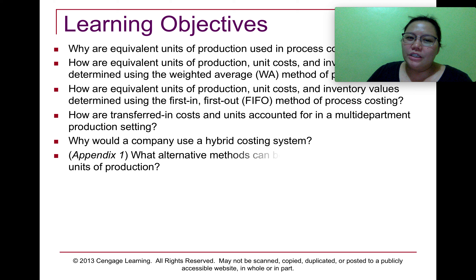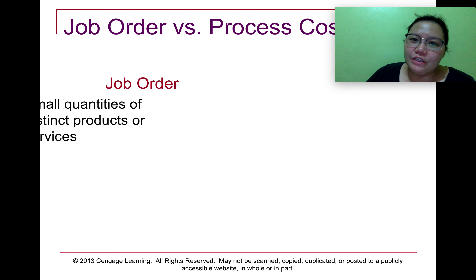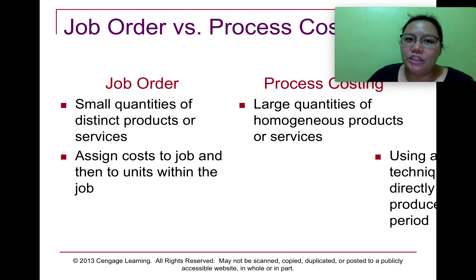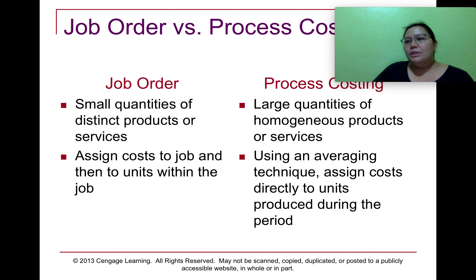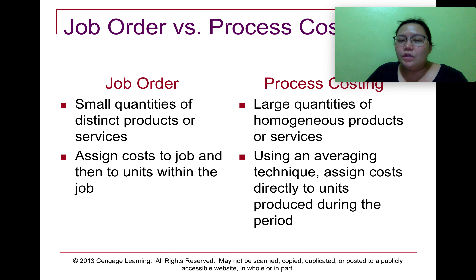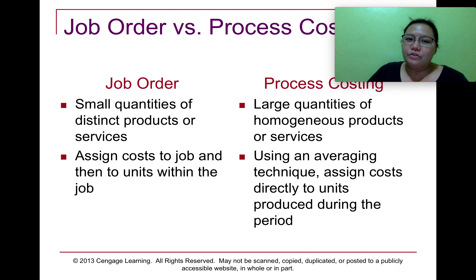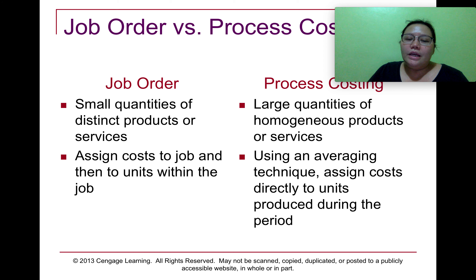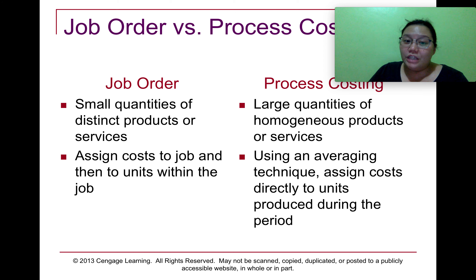So these are the learning objectives. The first thing we're going to do is differentiate job order costing and process costing. Job order costing is used when the company is producing small quantities of distinct products or services. We assign direct material, direct labor, and overhead cost to a job, and after determining the total cost of the job, we assign it to the number of units within the job itself.